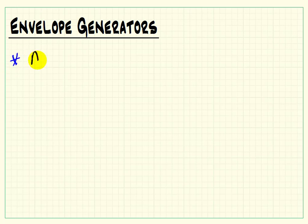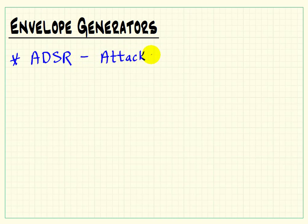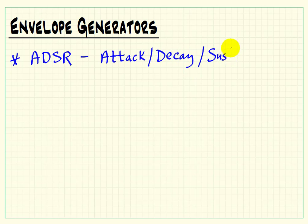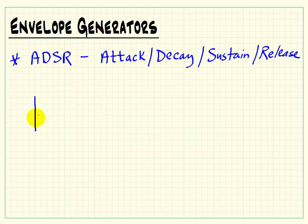The more general-purpose version is referred to as the attack, decay, sustain, release version of the envelope generator, or ADSR. This one has the advantage that it can keep a non-zero value for the envelope while a key is being held down, whether that's a short period of time or a long period of time.